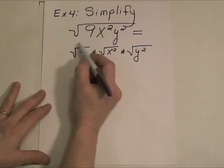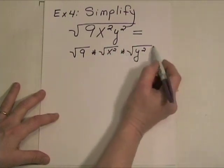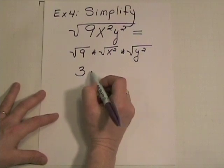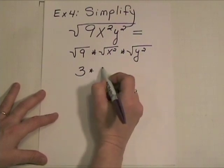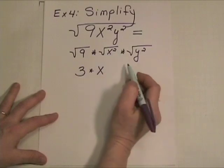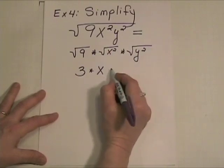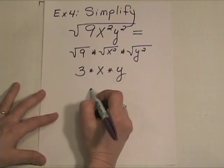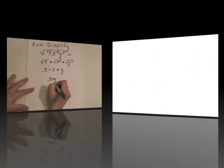This one will root nicely. This one will root nicely. And this one will root nicely. Here, we will get 3. And here, we will get x, because the square root of x squared just undoes the squaring. And here, we will get y. So, 3 times x times y, of course, is 3xy.